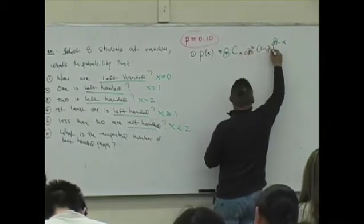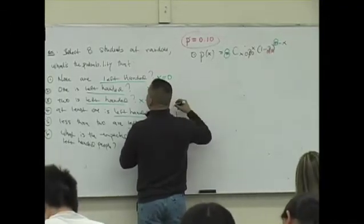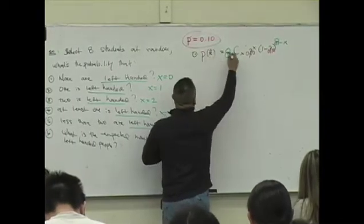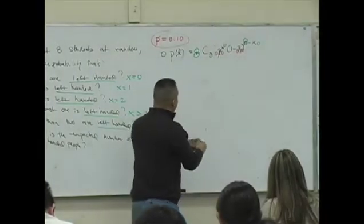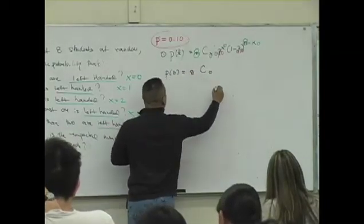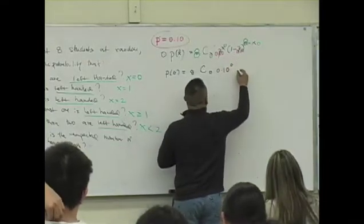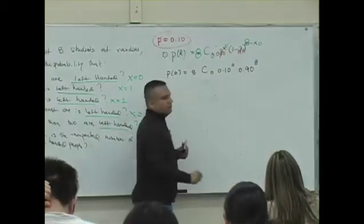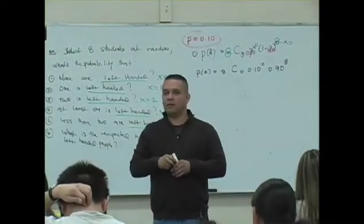And this is going to be 0.1. So what you're going to do then is for question one, x has the value of 0. Plug in all of those values where they should be plugged in at. And let's see what happens. You get p of 0 is 8 C 0, 0.10 to the 0. What's 1 minus 0.10? 0.90 to the, what is 8 minus 0? 8. You guys okay with that?